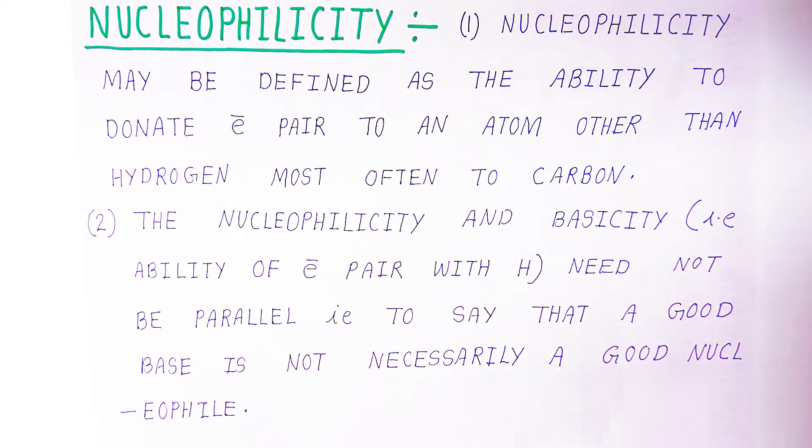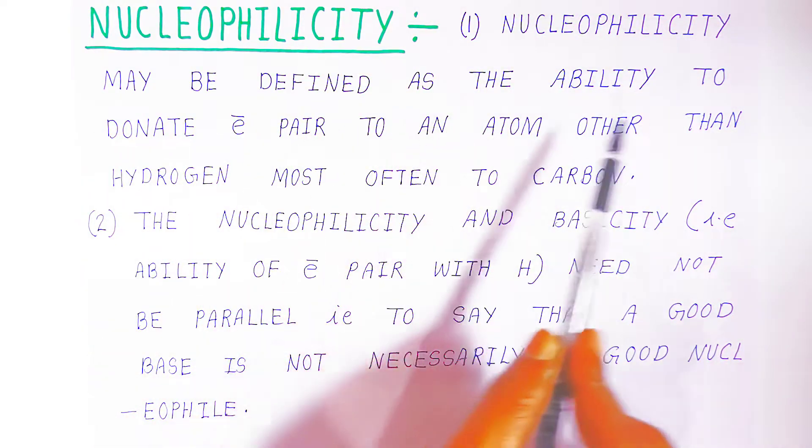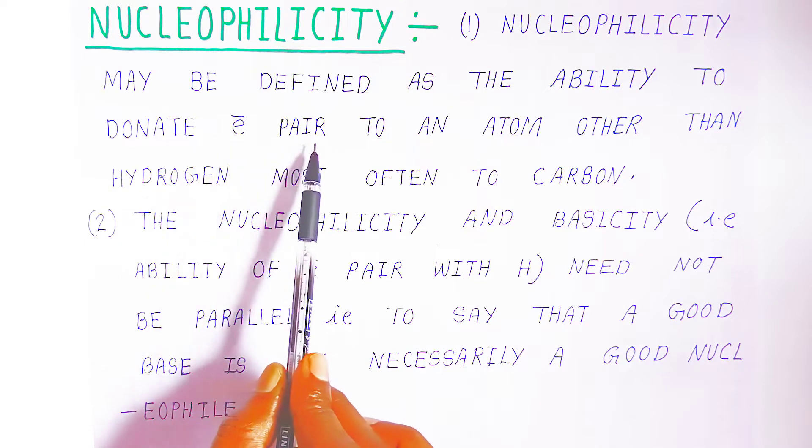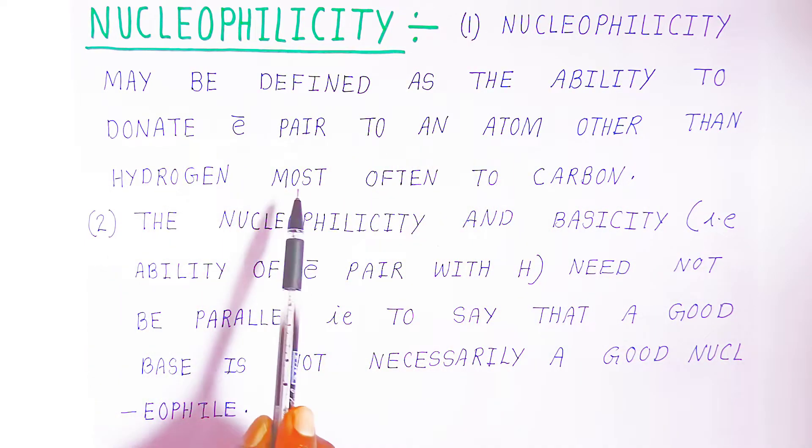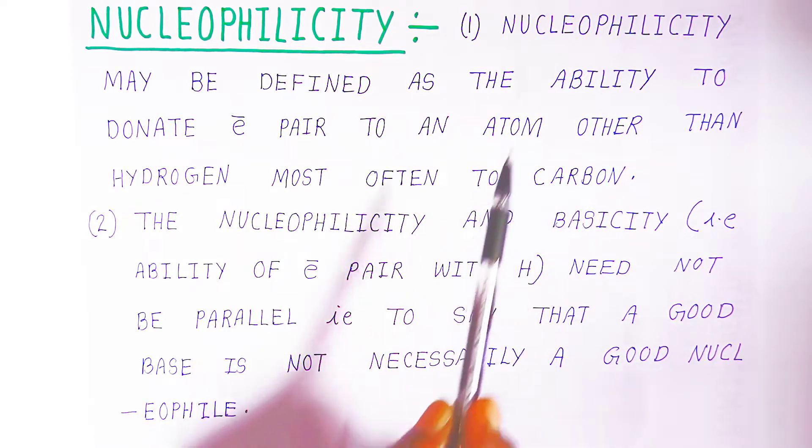Students, in examination they are asking, so you have to write like this: Nucleophilicity may be defined as ability to donate electron pair to an atom other than hydrogen, most often to carbon.